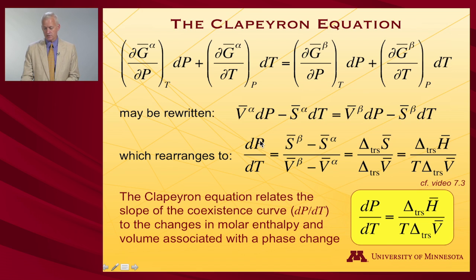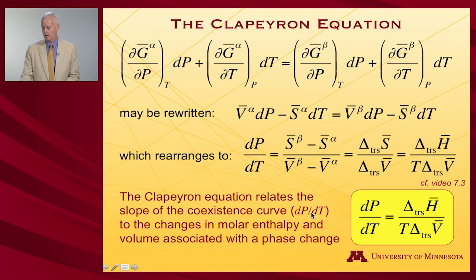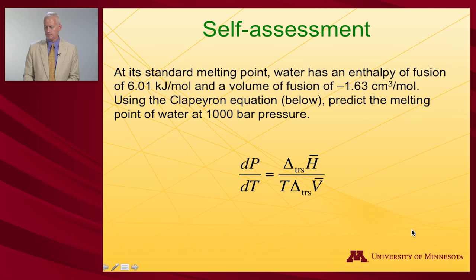And that is the Clapeyron equation. It relates the slope of the coexistence curve — that is, how pressure changes with temperature while two phases are in equilibrium — and equals the transition enthalpy divided by the temperature times the transition molar volume. Let's employ that in a short self-assessment.